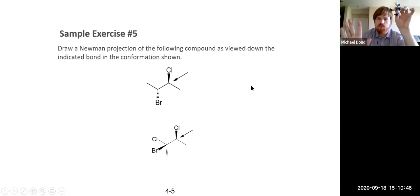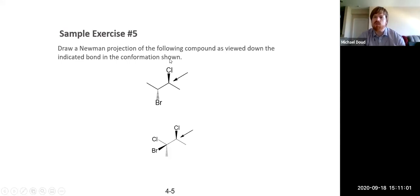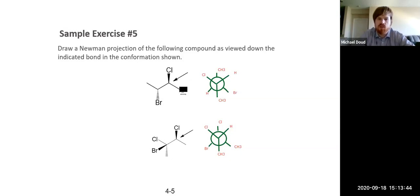Let's go ahead and work through more practice problems. Looking at this first one, we're looking down the C2-C3 axis — so C1, C2, C3, C4, and the front carbon is carbon two and the back carbon is carbon three. We're just identifying which carbon is front and which is back — we're not naming them.